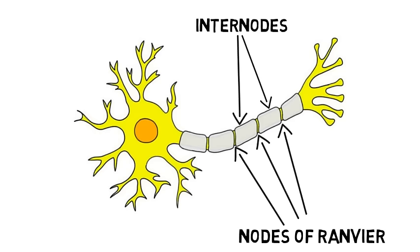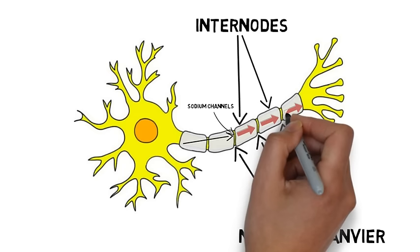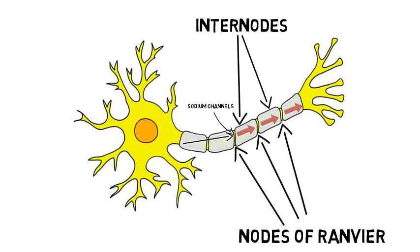The nodes of Ranvier are rich in sodium channels, which open in response to an action potential traveling down an axon, allowing positive sodium ions to rush in. This influx of sodium ions rejuvenates the action potential and helps to prevent it from dying out as it proceeds along the axon.